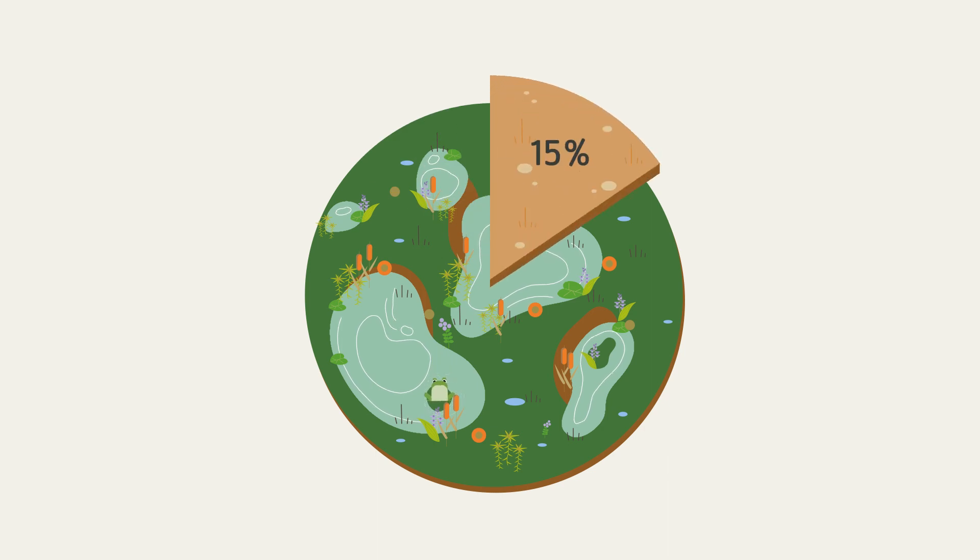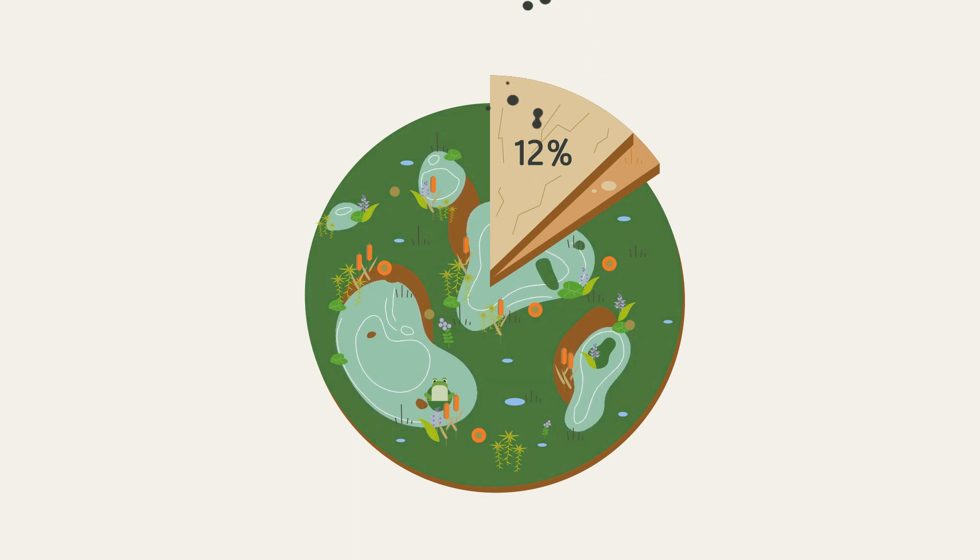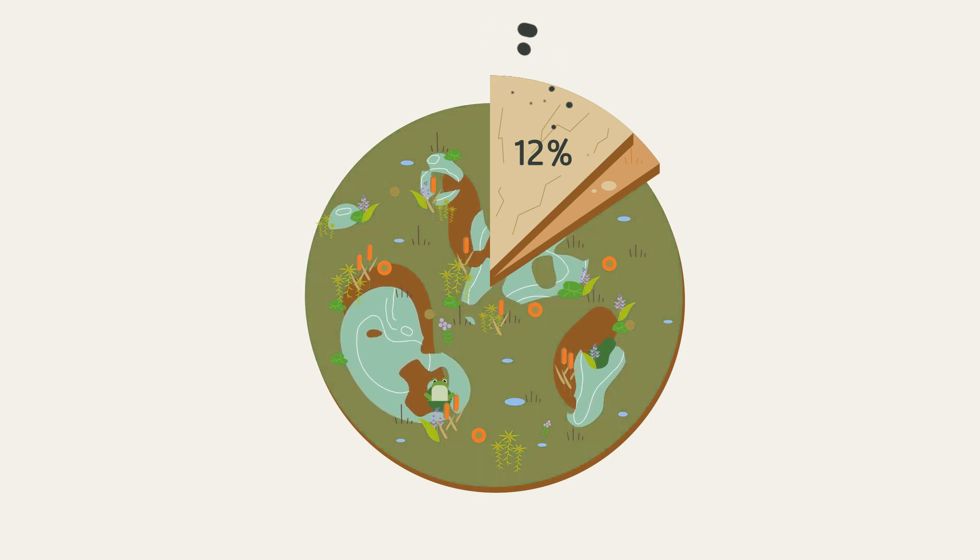Worldwide, up to 15% of peatlands are drained. 12% are so badly destroyed that they can no longer form peat. The majority is in a largely natural state but is highly endangered.